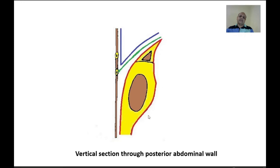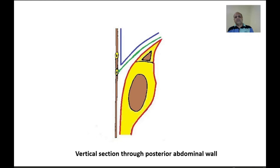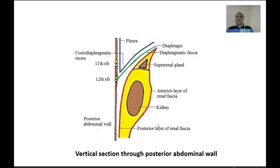Inferiorly, the anterior and posterior layers remain separate and cover the ureters. The posterior layer merges with the fascia iliaca, while the anterior layer merges with the extraperitoneal connective tissue in the right iliac fossa. Laterally, the renal fascia merges with the fascia transversalis. Medially, the anterior layer merges with the extraperitoneal connective tissue around the inferior vena cava and aorta, while the posterior layer merges with the lumbar vertebrae. On the medial side, the renal fascia forms a septum through which the renal vessels enter the hilum.